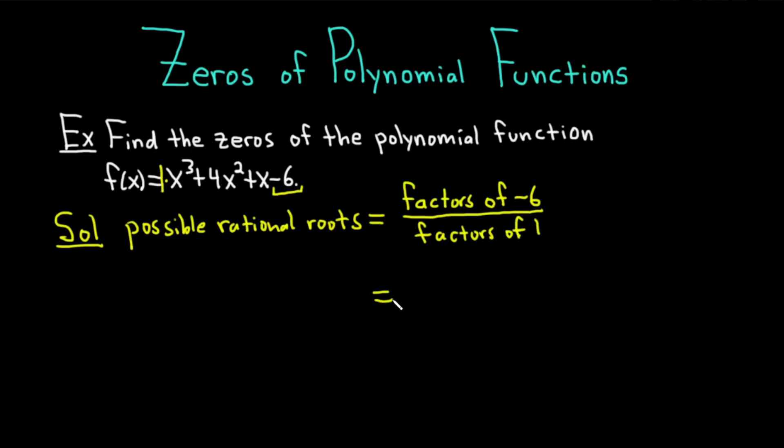This is equal to, the factors of 6 are 1, 2, and 3, but you want to put a plus or minus always. It's super important. It'll be ±1, ±2, actually 2 is also a factor, and then 3 and 6. So the factors of -6 are ±1, ±2, ±3, ±6, over the factors of 1, which are ±1.